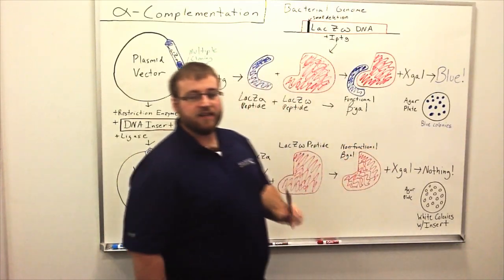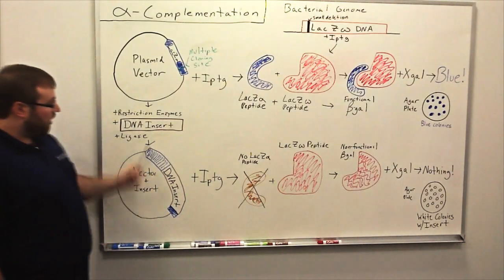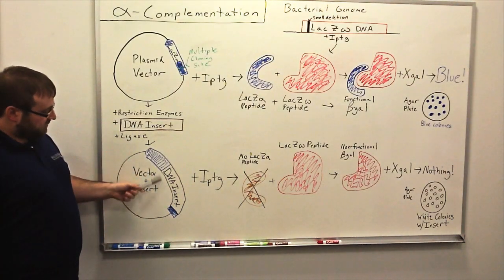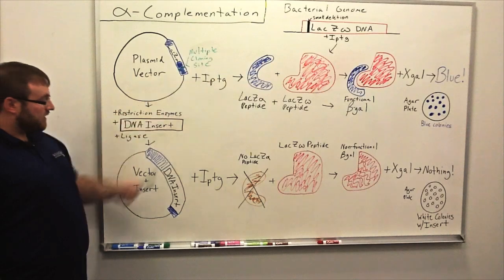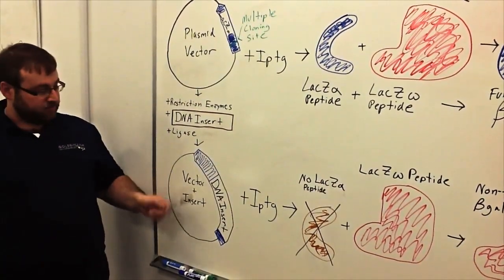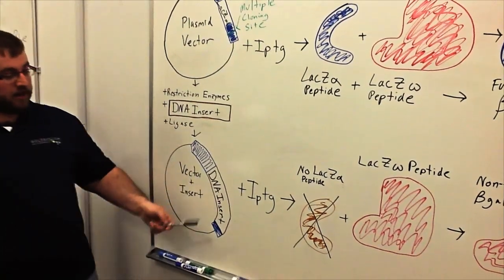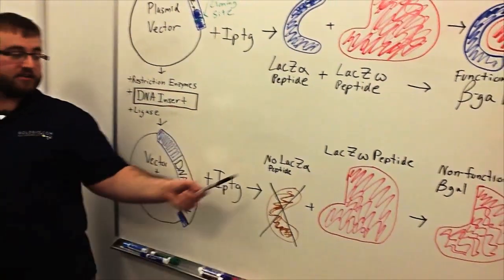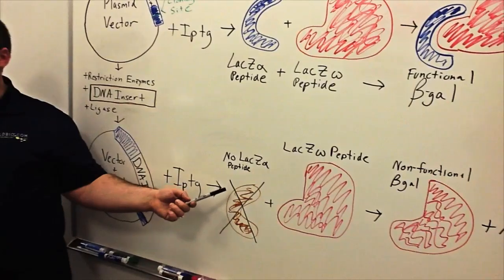We can take advantage of that interaction by inserting our DNA sequence into the multiple cloning site of the LAC-Z alpha gene. When our DNA insert is put into the LAC-Z alpha gene and expressed with IPTG, it does not create a LAC-Z alpha peptide.